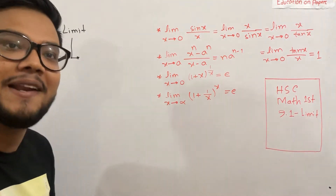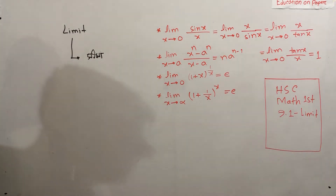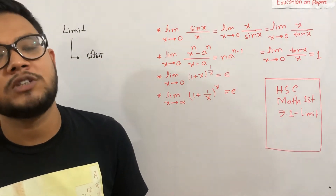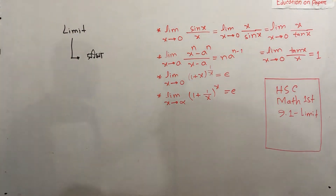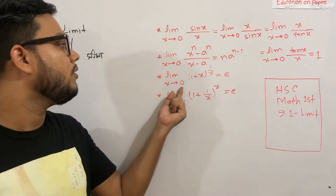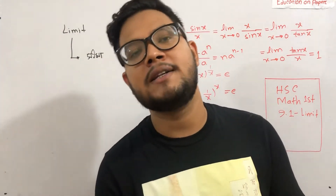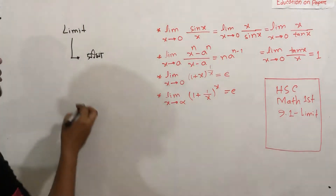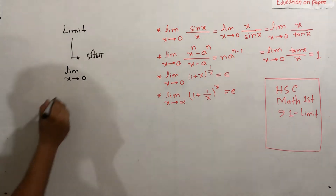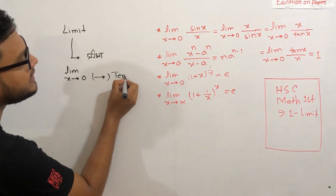What does limit mean? How do you know the limit? If you know the limit, you have to find the limit. The limit is x tends to 0.